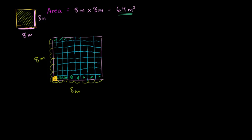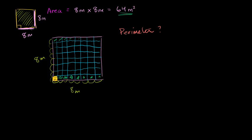Now, what happens if I were to ask you the perimeter of my square? The perimeter is the distance you need to go to go around the square. It's not measuring how much carpeting you need — it's measuring, for example, if you wanted to put a fence around your carpet, how much fencing you would need. So it would be the distance around: that distance, plus that distance, plus that distance, plus that distance.